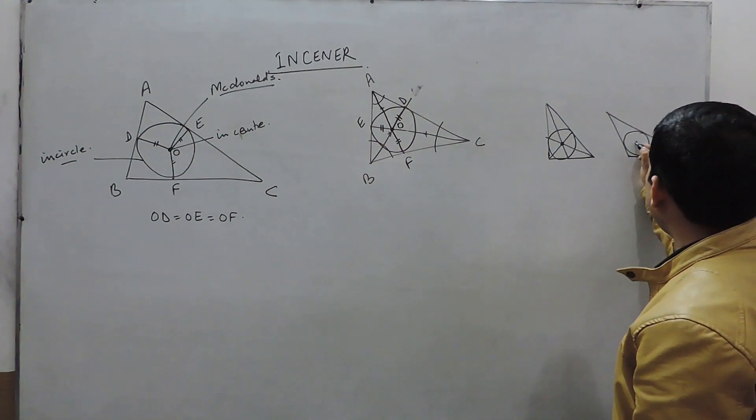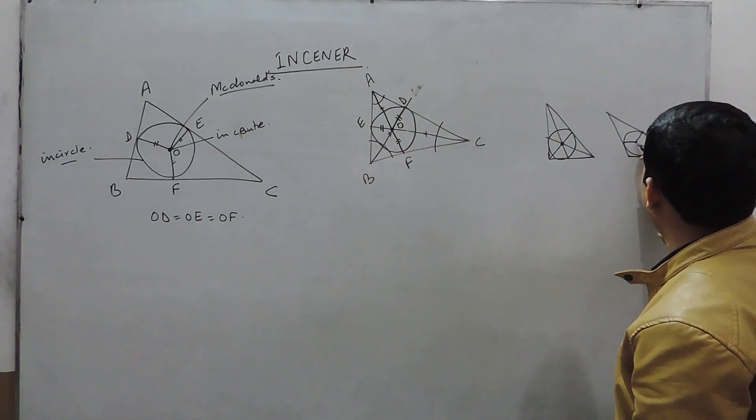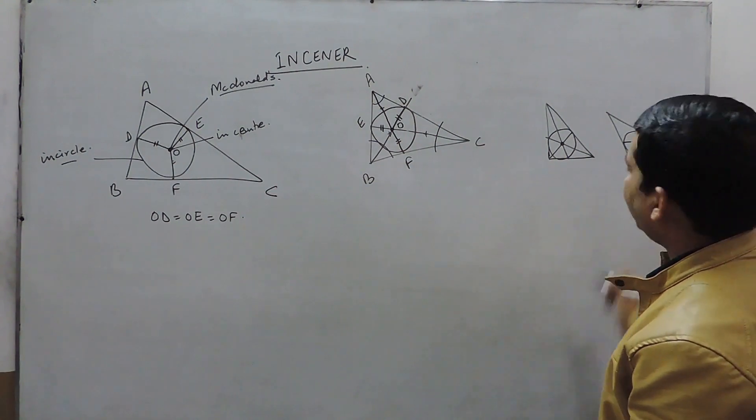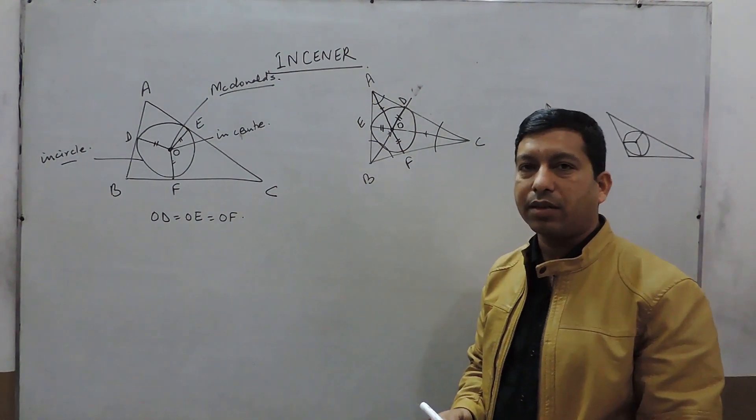So this is the InCenter, and the point which is equidistant from all the vertices is known as the InCenter of the circle. Thank you.